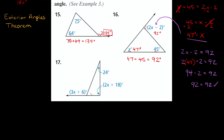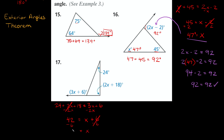Number 17: our two interior angles are 24 degrees and 2x plus 18, and the exterior angle is 3x plus 6. Adding the interior angles: 24 plus 2x plus 18 equals 3x plus 6. Subtract 2x from both sides so the x terms combine: 24 plus 18 equals 42, and 3x minus 2x is x, giving us 42 equals x plus 6. Subtract 6 from both sides: x equals 36.